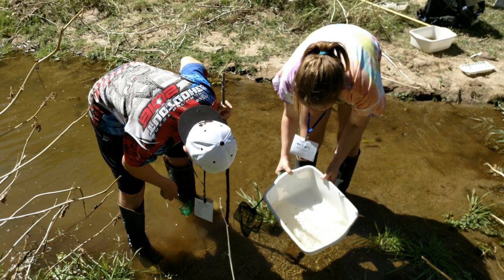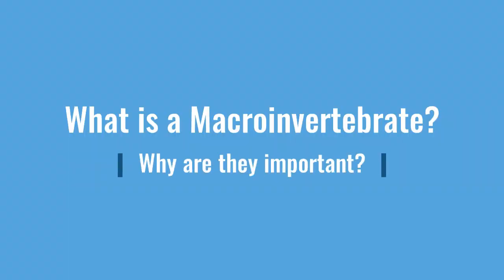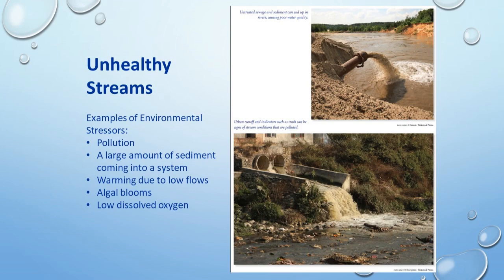Aquatic biologists are concerned with water quality and how it impacts those creatures living in the water. Macroinvertebrates are organisms that aquatic biologists are very interested in. They are an important part of wetlands, springs, and stream ecosystems. A variety of environmental stressors can negatively impact macroinvertebrate populations. Urban and agricultural runoff can produce conditions that some macroinvertebrates cannot tolerate.